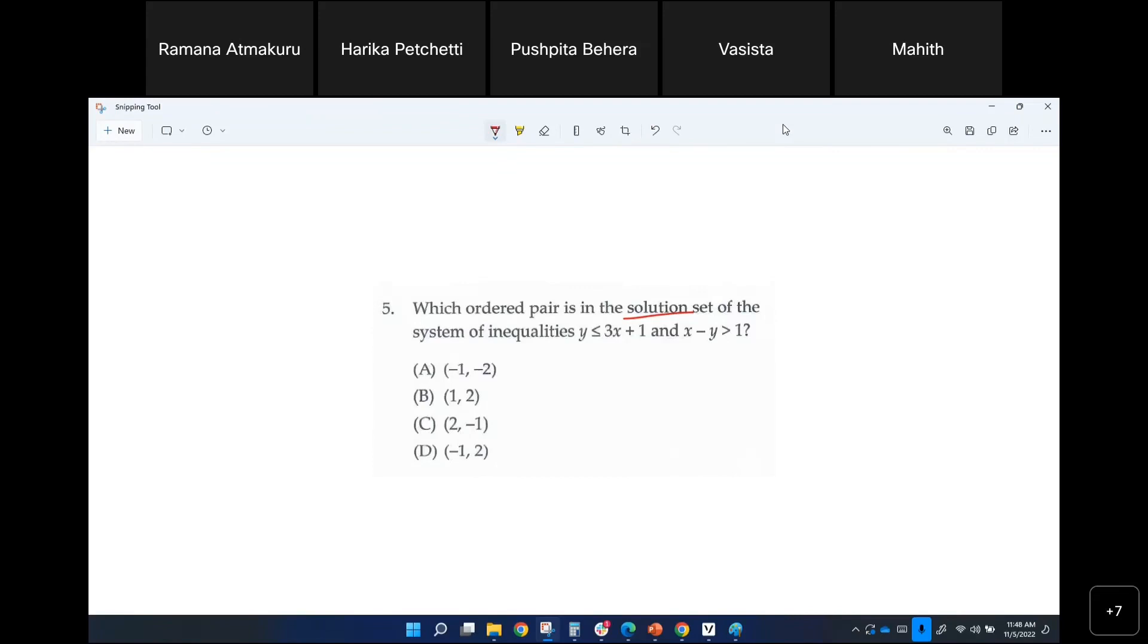Plug in negative one and negative two for x and y in the first one. What do you get? Y is negative two and then your x is negative one, so that's negative three plus one. Does it look like it satisfies? Yep, that works. How about the next one? Plug in the same ordered pair in the second equation.